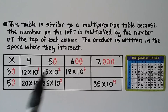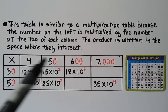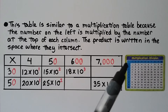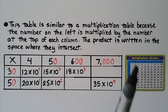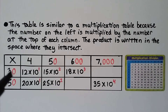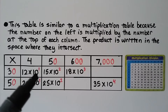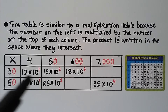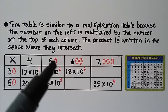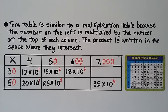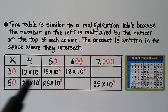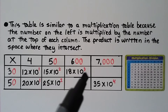This table is similar to a multiplication table: the number on the left is multiplied by the number at the top of each column, and the product is written where they intersect. 30 times 4: basic fact 3 times 4 is 12, one zero, so 12 times 10 to the first power. 30 times 50: basic fact 3 times 5 is 15, two zeros, so 15 times 10 to the second power. 30 times 600: basic fact 3 times 6 is 18, three zeros, so 18 times 10 to the third power.